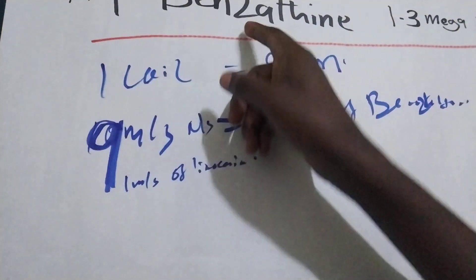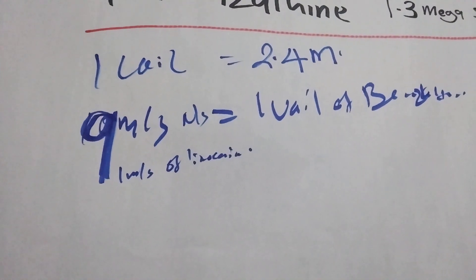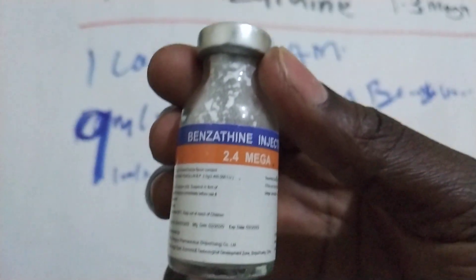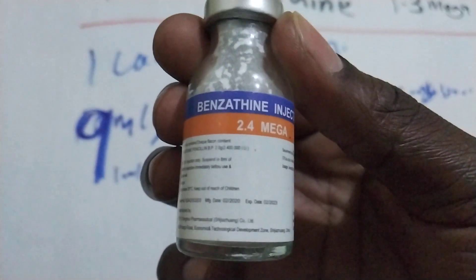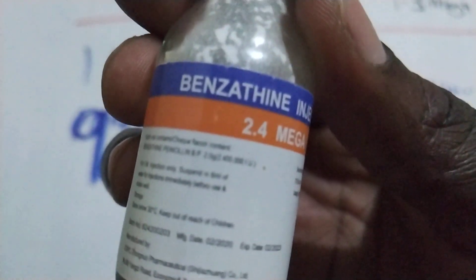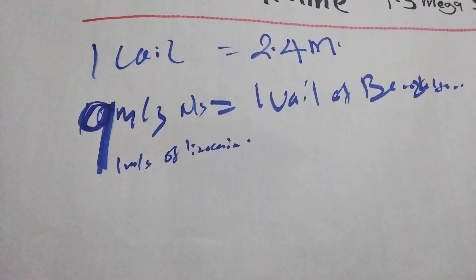One vial of benzathine is having 2.4 mega unit as you can see from here. Benzathine 2.4 mega. And if you see the international unit, it is two million four hundred thousand.